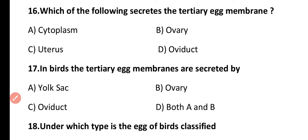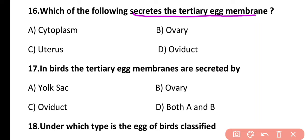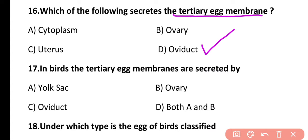Question 16. Which of the following secretes the tertiary egg membrane? Cytoplasm, ovary, uterus, or oviduct? The correct answer is option D. The tertiary egg membrane, which is albumin, is secreted by the oviduct.